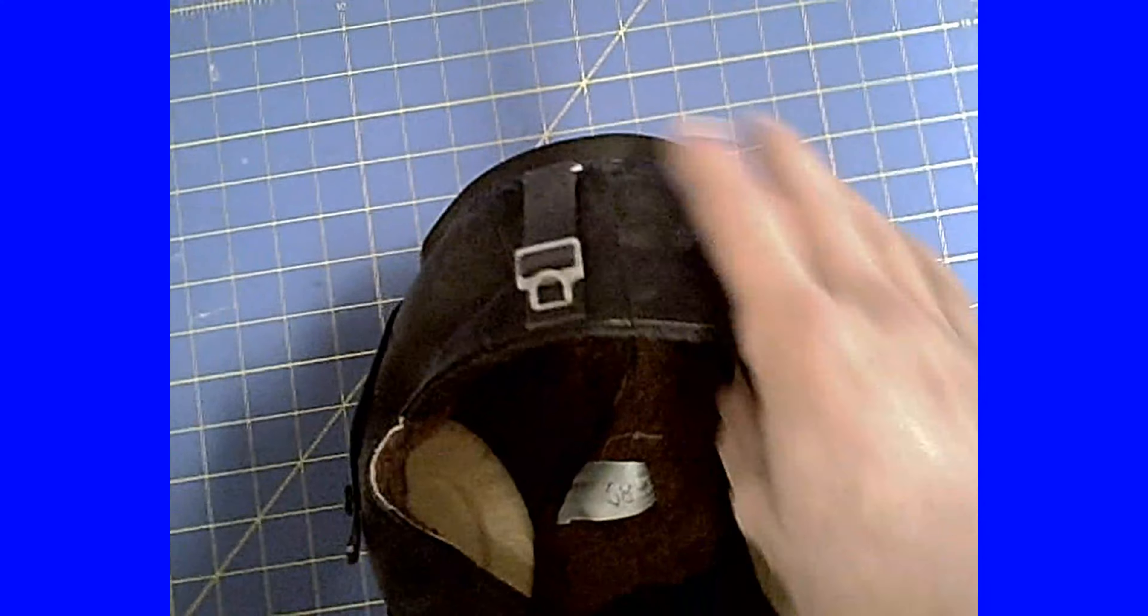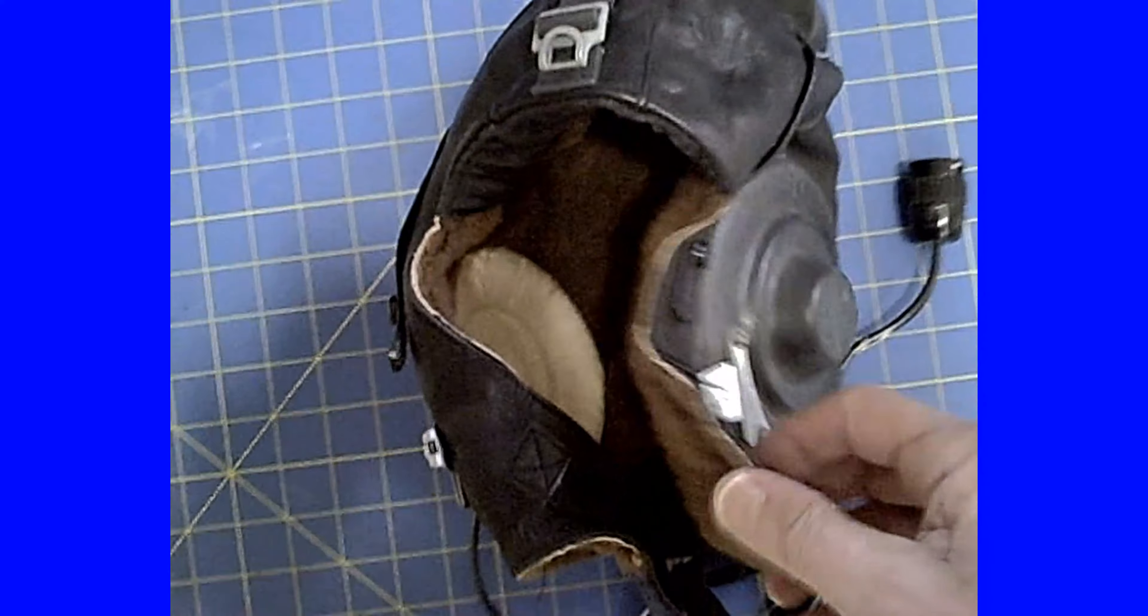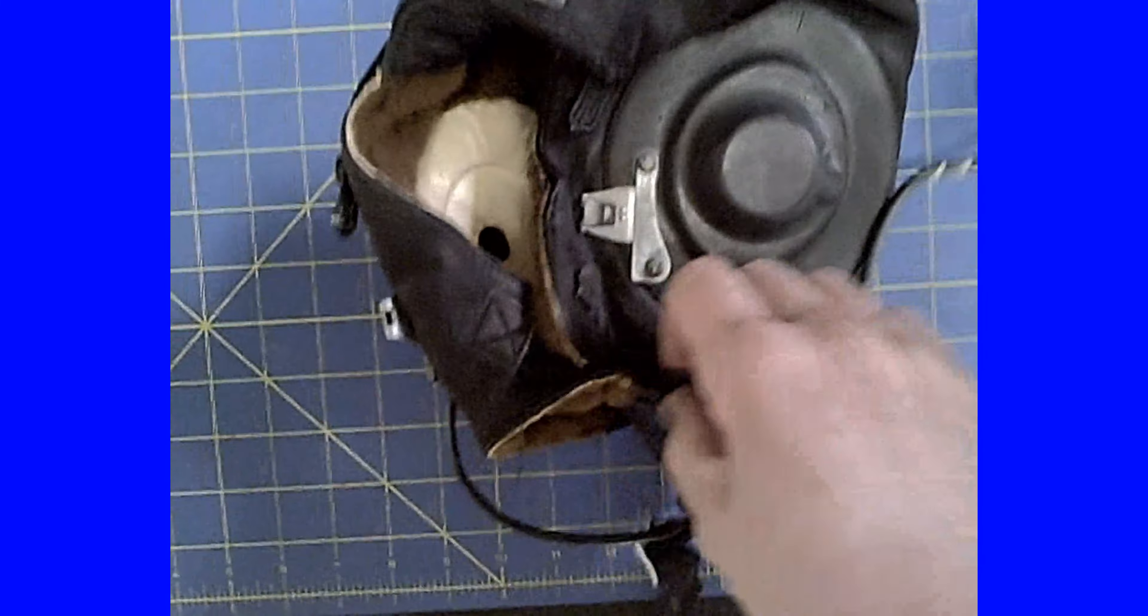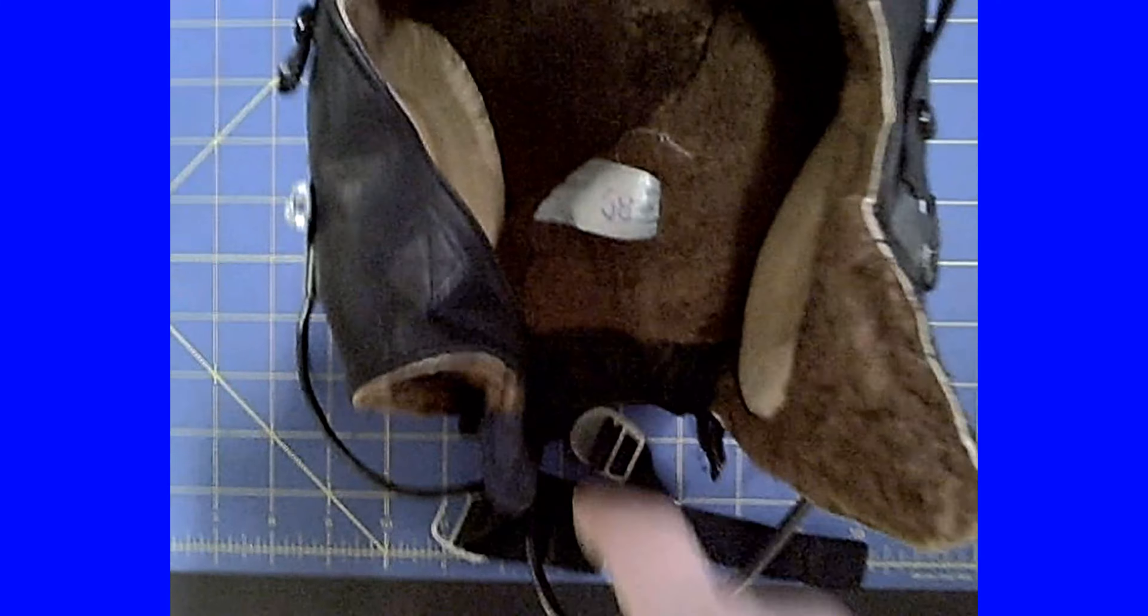You have a clip here to hold the goggles in place. You have the communications gear, you have the headphones built right in, synthetic lining. This happens to be a size 58, which is like a seven and a half US size.